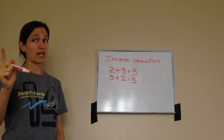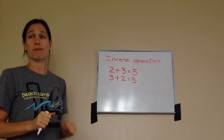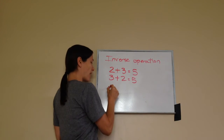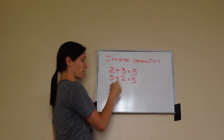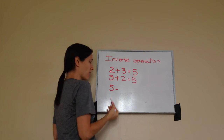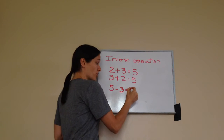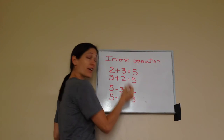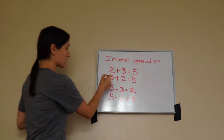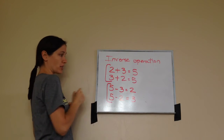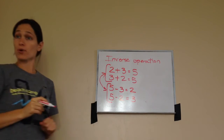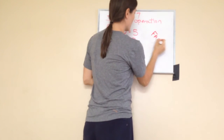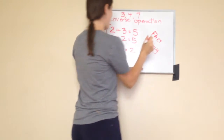When you're working with a subtraction problem you always have to choose the biggest number. Which one is my biggest? Five. So I'll do a subtraction problem using these same numbers: five minus three equals two, and five minus two equals three. These addition problems and these subtraction problems are inverse operations. This is a fact family — we used the numbers two, three, and five to make two addition problems and two subtraction problems.